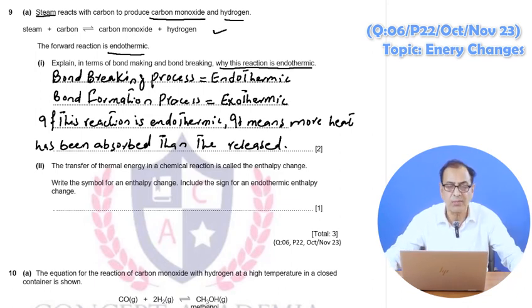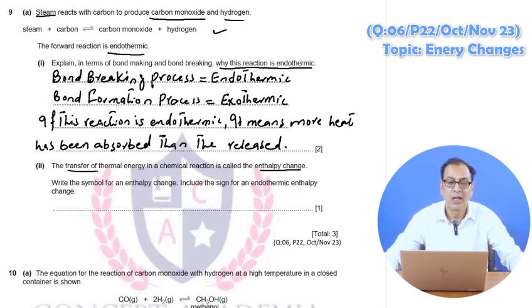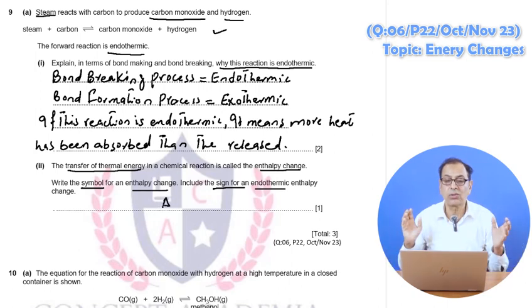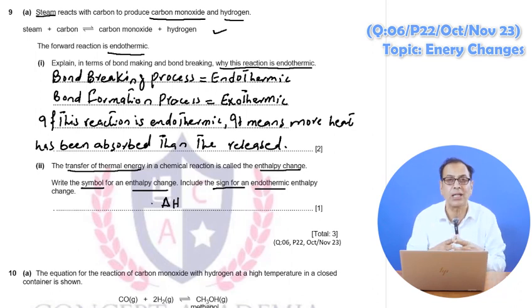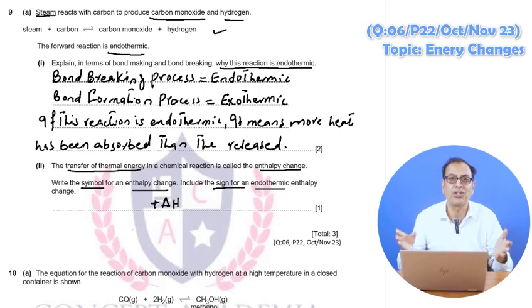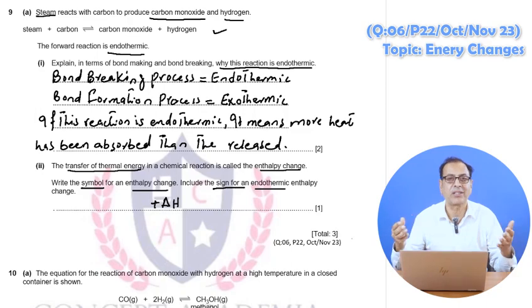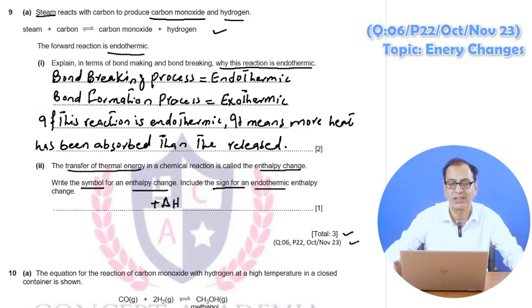The transfer of thermal energy in a chemical reaction is called enthalpy. The symbol for enthalpy change is delta H. Since the reaction is endothermic, the sign will be positive, so delta H is positive.